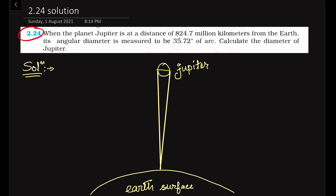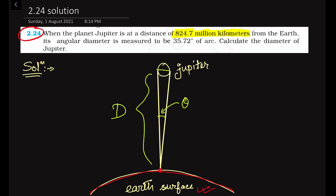In this problem, we have: when the planet Jupiter is at a distance of 824 million kilometers from the Earth. We can assume this distance is capital D, and from a point on the Earth's surface we are observing Jupiter in the sky. This angle is the parallax angle, theta. In this question, theta is equal to 35.72 seconds of arc.